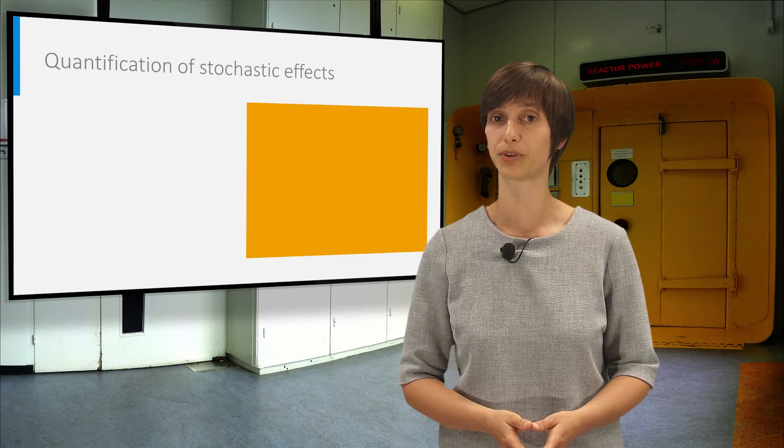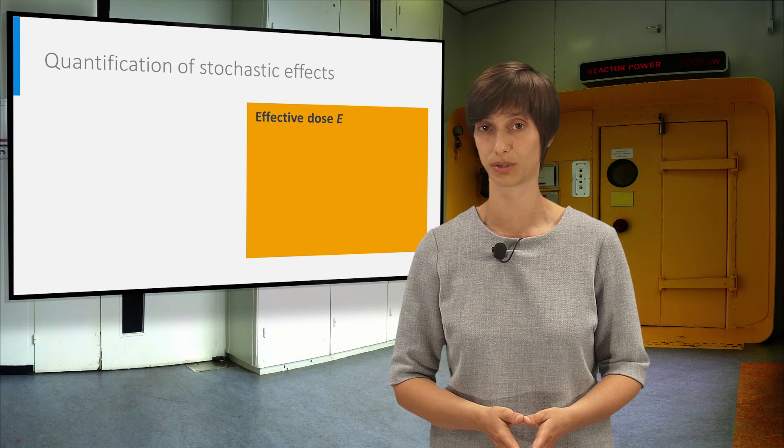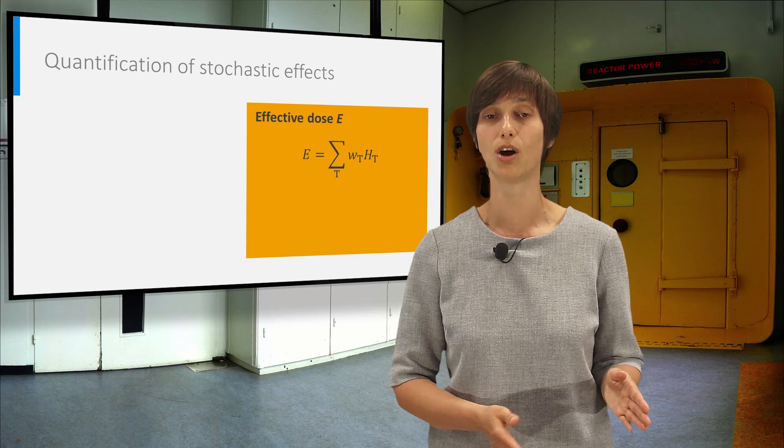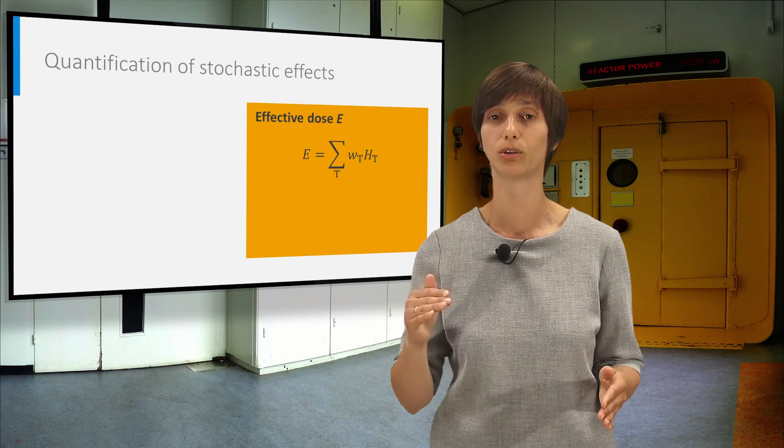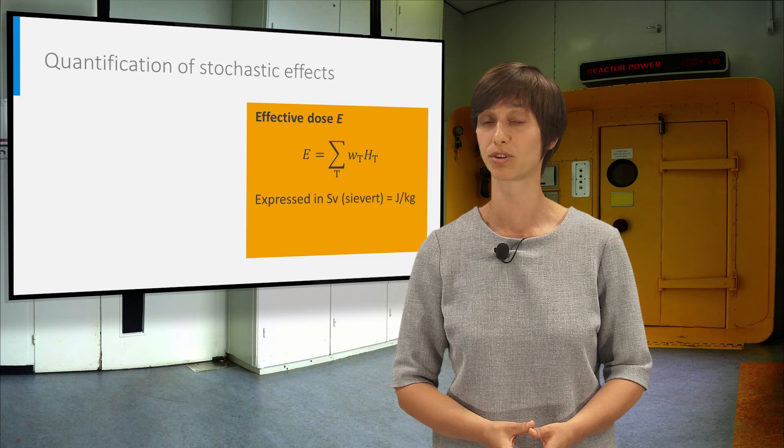The stochastic effects for the whole body combined are quantified by the total effective dose. This second quantity is calculated by multiplying the organ-equivalent doses for all tissues with a tissue-weighing factor, and then sum all the contributions for all tissues. The effective dose is also expressed in Sievert.